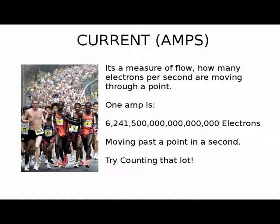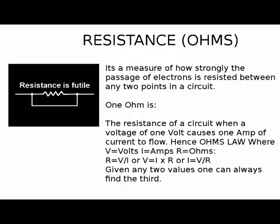So let's do a little bit of revision. From what we saw in the previous tutorial, current, which is measured in amps, is a measure of flow — it's how many electrons per second are moving through a point. One amp is an absolutely huge number of electrons moving past a point in a second. All materials resist this flow of electrons to a certain extent, some more than others. Resistance is measured in ohms, and the resistance of a circuit when a voltage of one volt causes one amp of current to flow is one ohm. Hence Ohm's law.